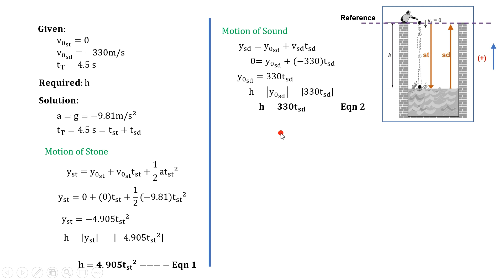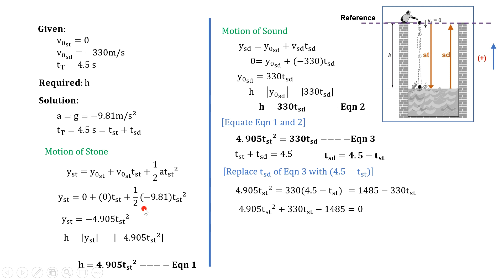Now that we have two equations for depth h, let us now equate them to get the third equation. Notice that this third equation has two unknowns. Therefore, we need one more equation with time variables to get their values. Recall that earlier, we already noted this equation: t_st equals 4.5 minus t_sd. So now replacing t_st of equation 3 with this newly derived expression, we now have this equation. By distributing 330, we can simplify it as follows. This allows us to get this quadratic equation after rearranging the terms.